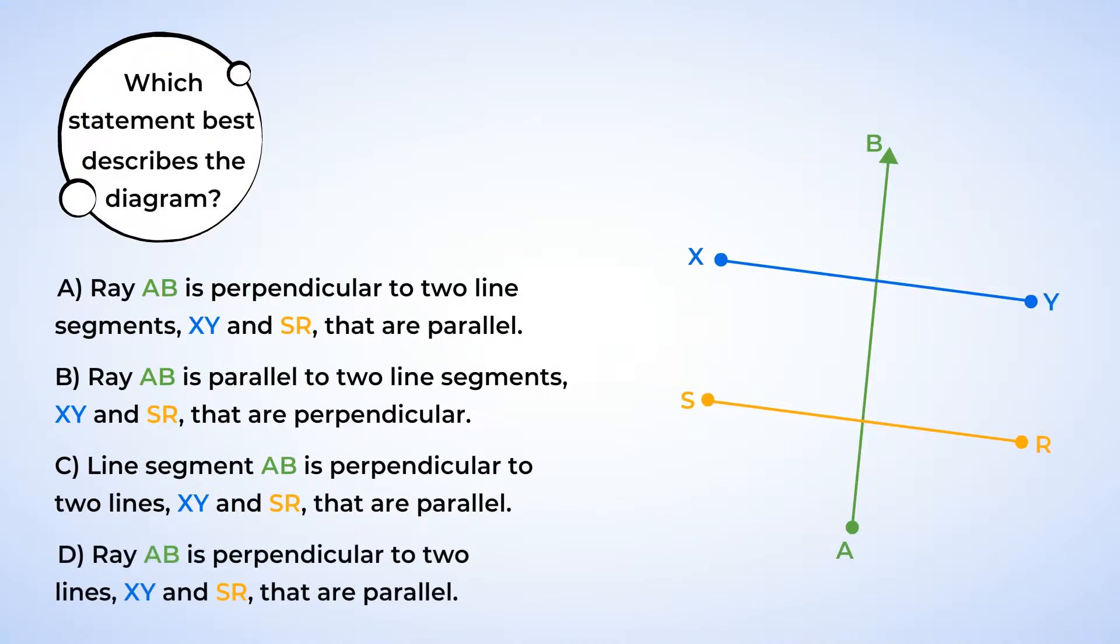Well, three of the statements label AB as a ray, and one labels it as a line segment. Looking at the diagram, there's an endpoint at A, and it continues through point B. So this means that AB is a ray. So we can cross off statement C.